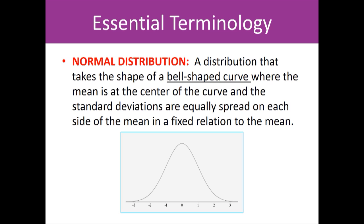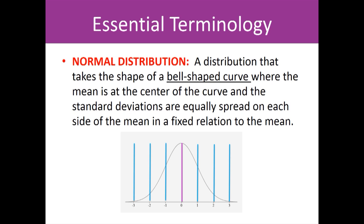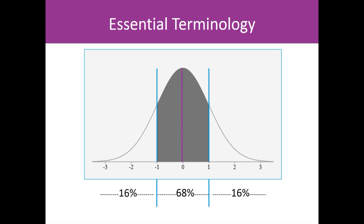First, we need to define two terms which unfortunately have very similar labels. The first is normal distribution. This is a distribution that reflects a normal or bell-shaped curve. When a curve is bell-shaped, the mean is at the center of the curve. The standard deviations are equally spread on each side of the mean and have a fixed relationship to the mean. Therefore, the percentage of scores between the mean and each standard deviation is the same for every single normal curve. For example, for a normal curve, 68 percent of the scores lie between positive and negative 1 standard deviation. 16 percent of scores lie below negative 1 standard deviation and 16 percent lie above positive 1 standard deviation. This is true for every normal curve.